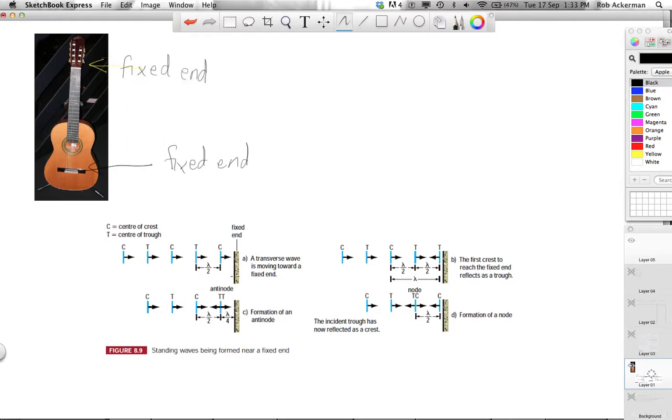So we call that a fixed end. And also I should probably use another color there. Right there, there is another fixed end. Now I want you to consider what happens if you pluck the guitar string. This would be kind of like taking a slinky and stretching it out, holding it at both ends like we do in class during our labs, and then sending a pulse all the way down it.